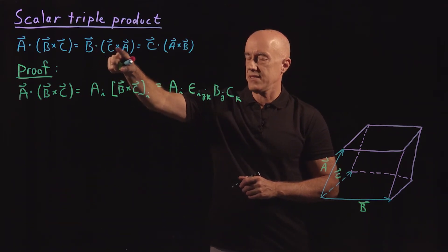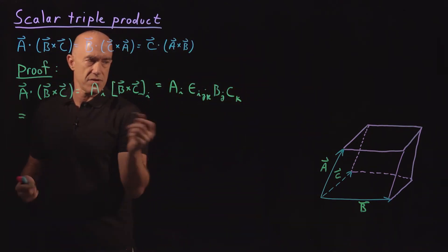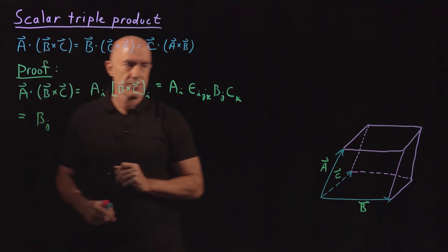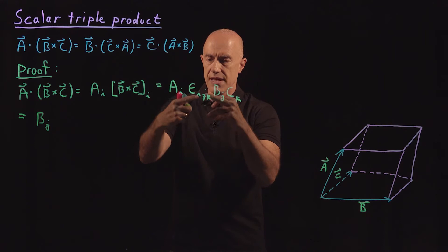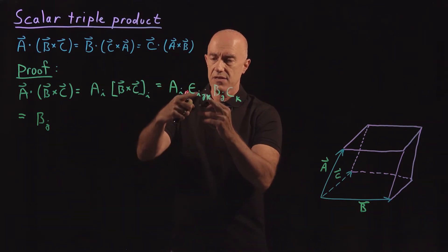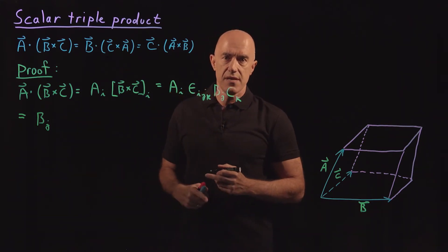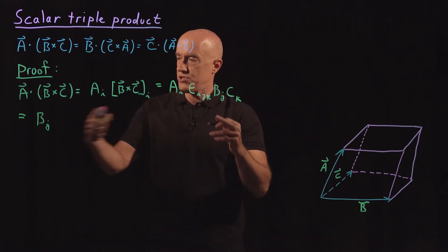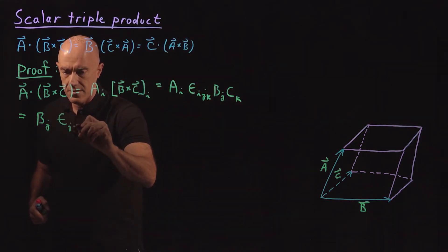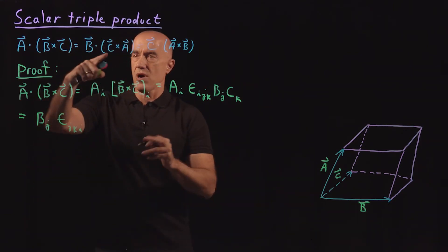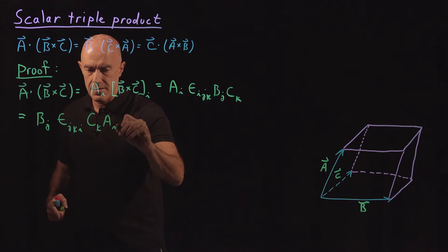Now we're trying to get to B dot C cross A. So I would like to have the B in front. So these things commute. So I write B_J here. But now I want to move these indices so that J then gets the front index. So remember that Epsilon I, J, K is equal to Epsilon J, K, I as long as we keep the cyclic order the same. So I put J in the first index so that becomes Epsilon J, K, I. And we have, we want here a C, A, so it will be C_K, A_I.